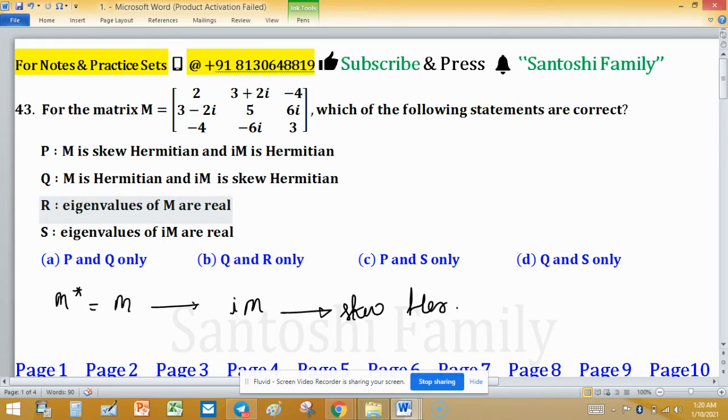We check statements P, Q, R, S one by one. Statement P says M is skew Hermitian, so this statement is false.